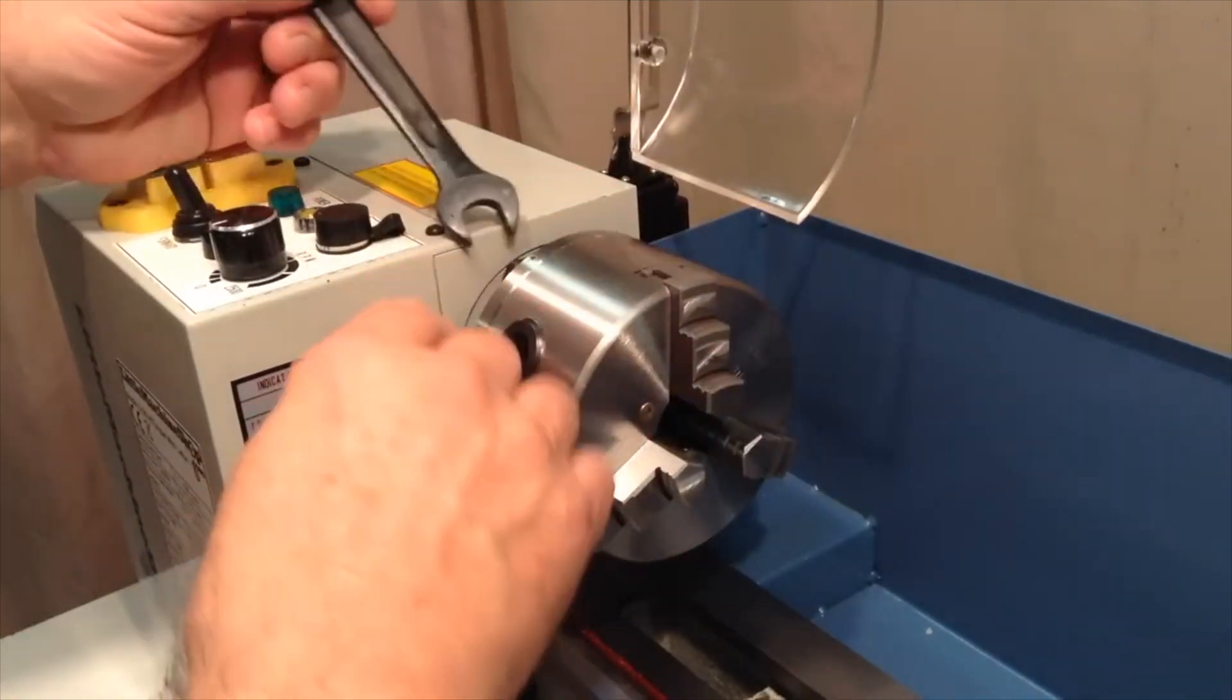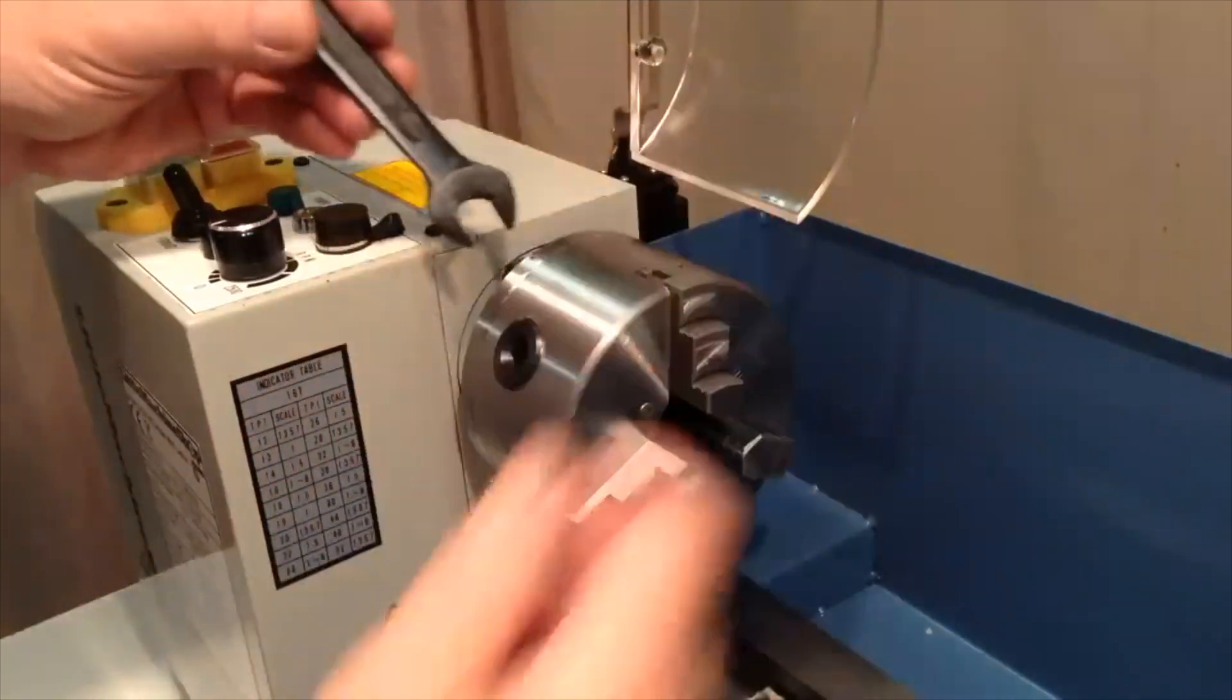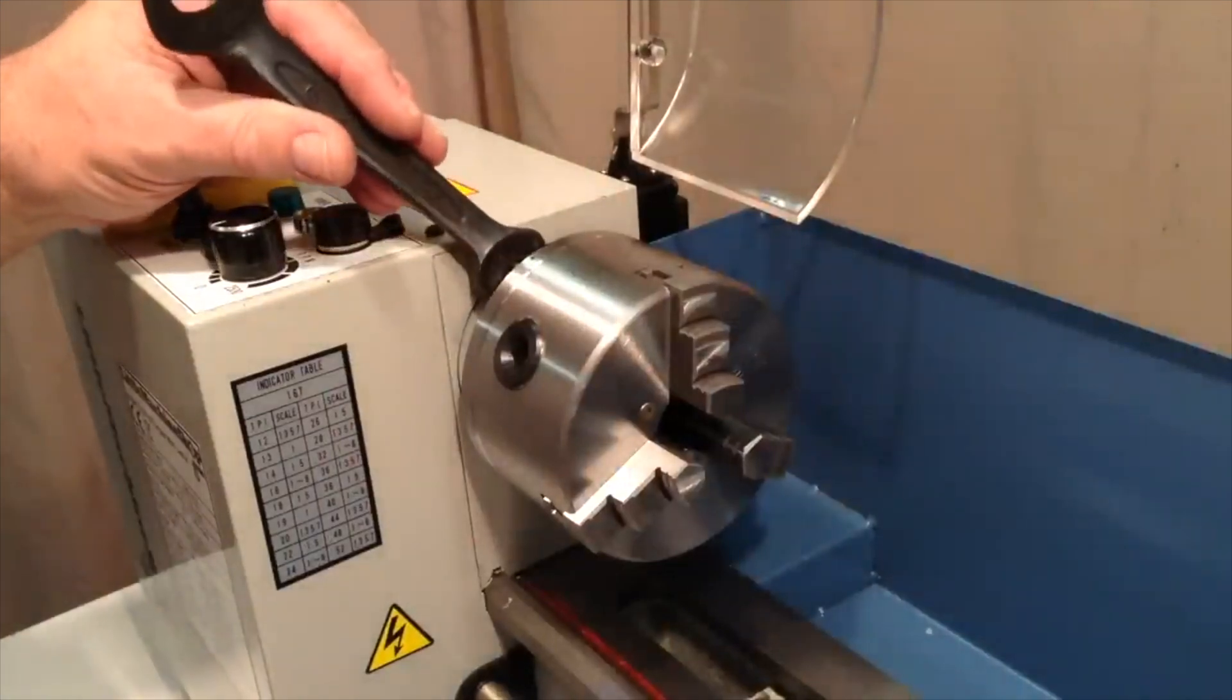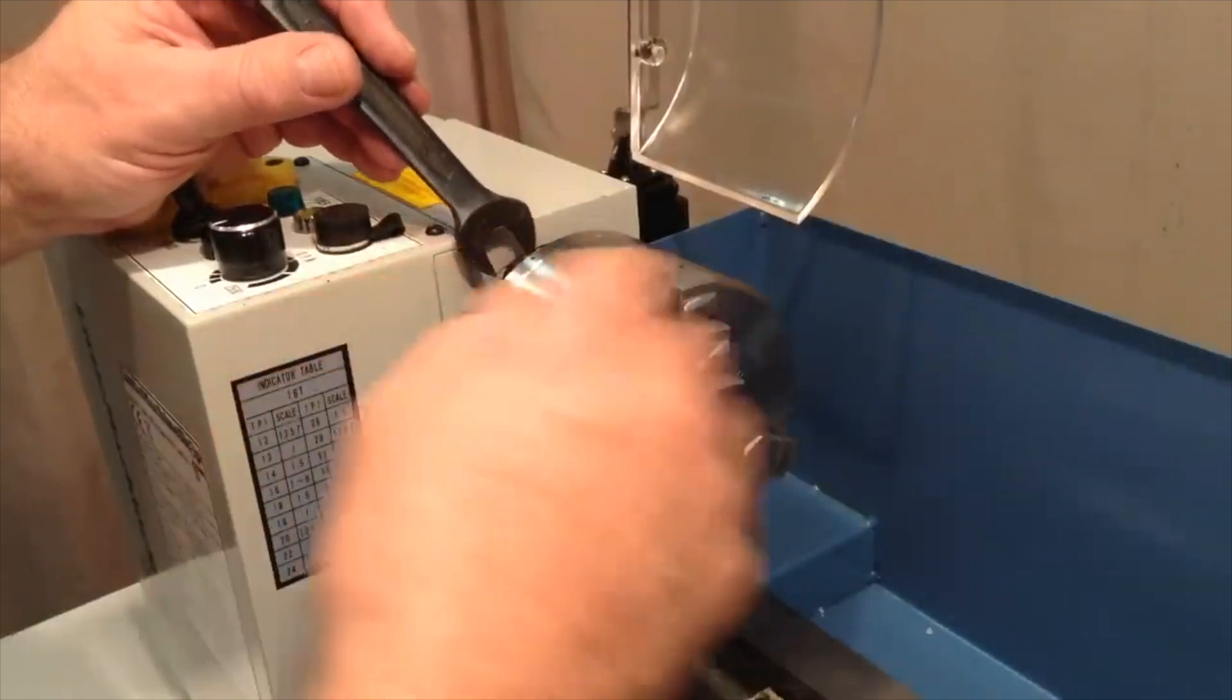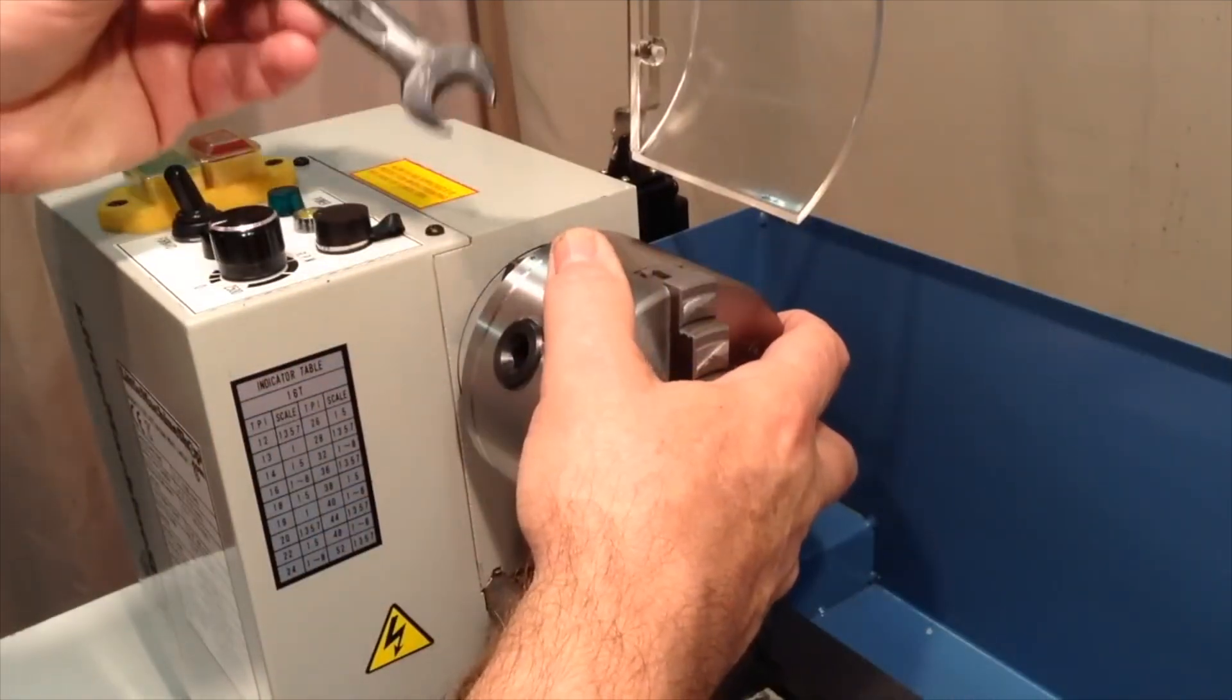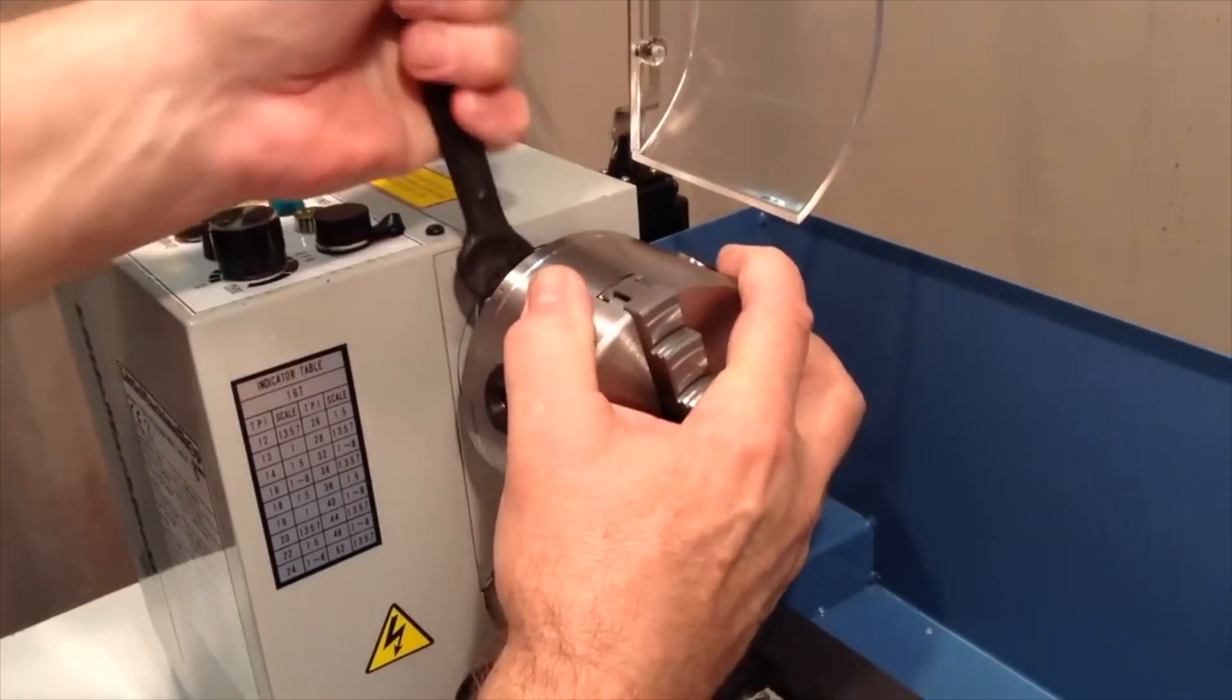To remove the chuck you need to take one of the standard included wrenches, in this case it's a 14 millimeter. On every other mini lathe that I've seen, the nuts here are typically smaller than this, so this is kind of a larger wrench than I'm used to using on the mini lathe.